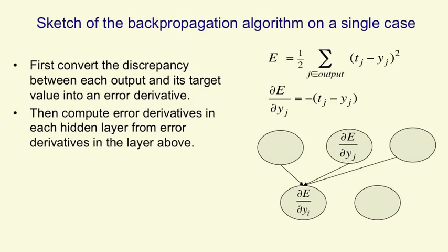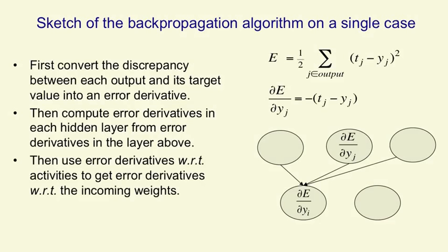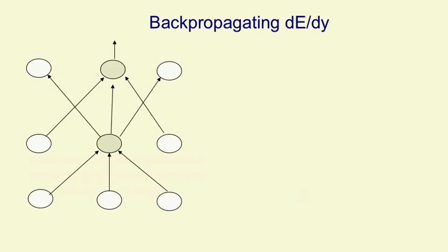So we want to compute DE by DYI. When we change the output of unit I, it changes the activities of all the outgoing output units, so we have to sum up all those effects. The backpropagation algorithm takes error derivatives already computed for the top layer and combines them using the same weights as in the forward pass to get error derivatives in the layer below. This slide explains the backpropagation algorithm, and you really need to understand it — the first time you see it you may have to study it for a long time.